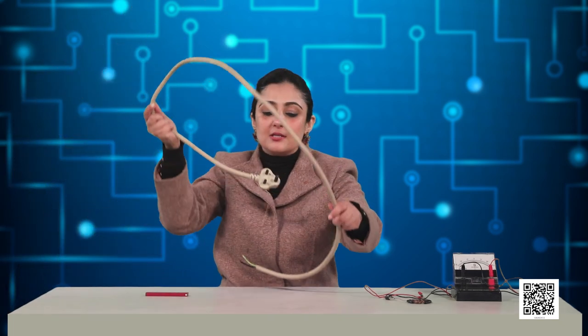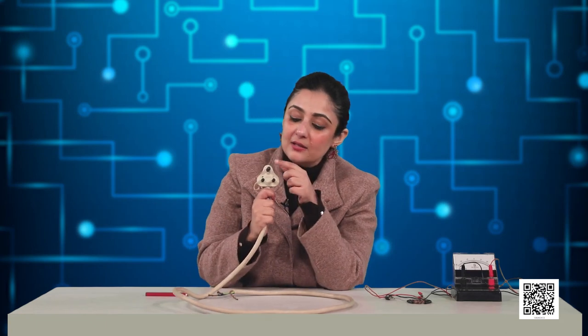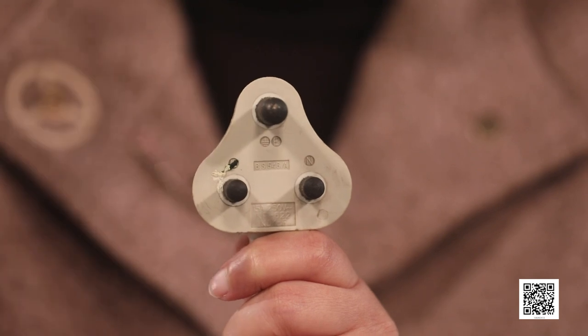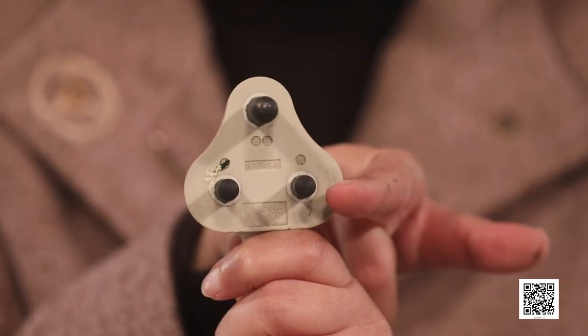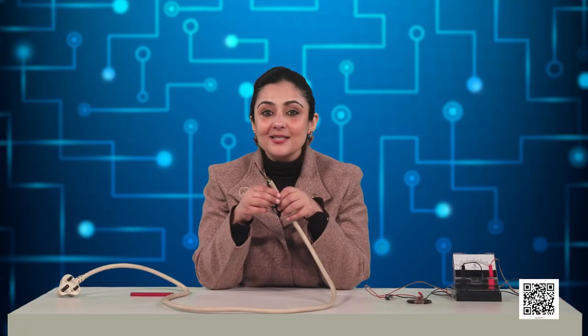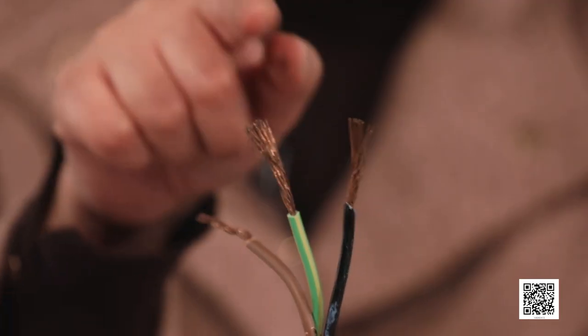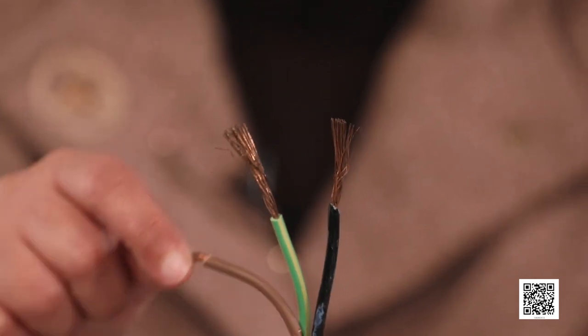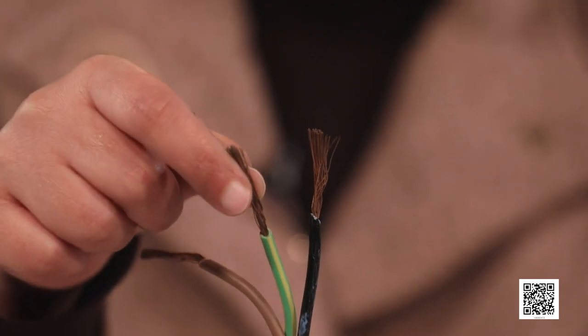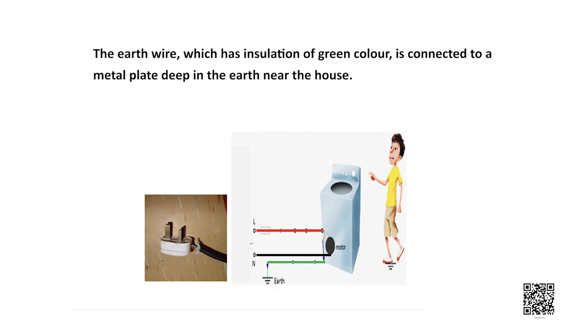Let us observe a regular plug that you must have seen in your households. It's a 3 pin plug. This is connected to the earth wire. One of it is marked as live which means the red wire and one of it is marked as N which means the neutral wire. And now let us see that inside this huge wire, actually there are these 3 wires which I just talked about: the black wire which is the neutral wire, the red wire which is the live wire, and this green wire is the earth wire. The earth wire which has an insulation of green color is actually connected to a metallic plate which is buried deep inside the earth near the house.